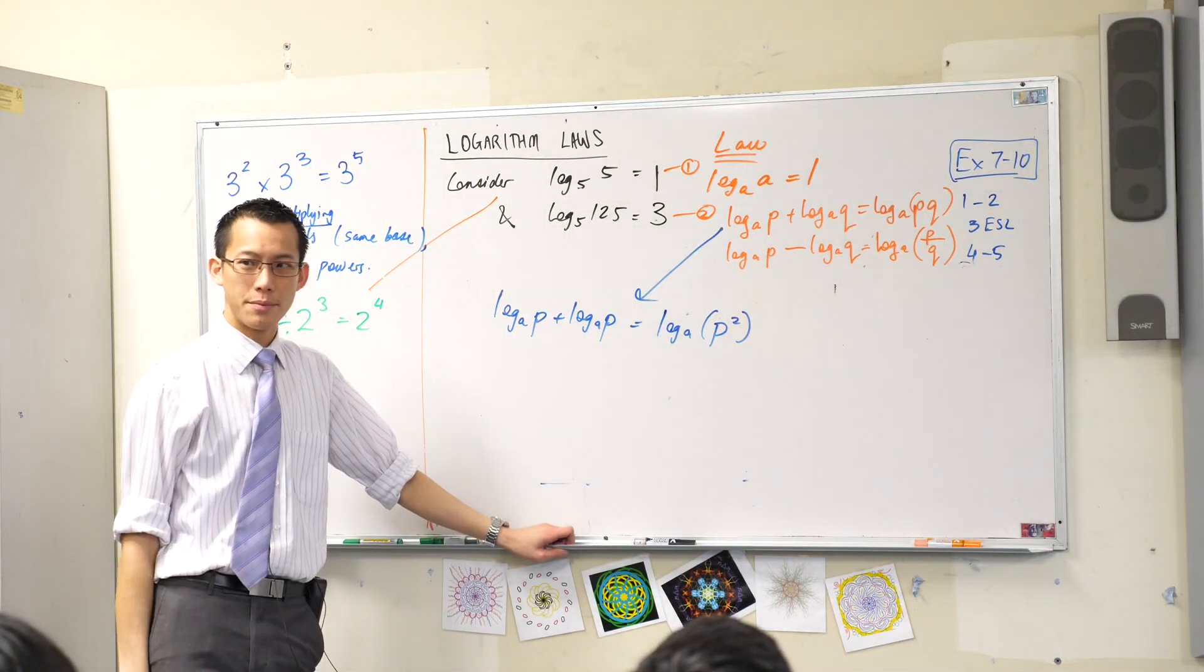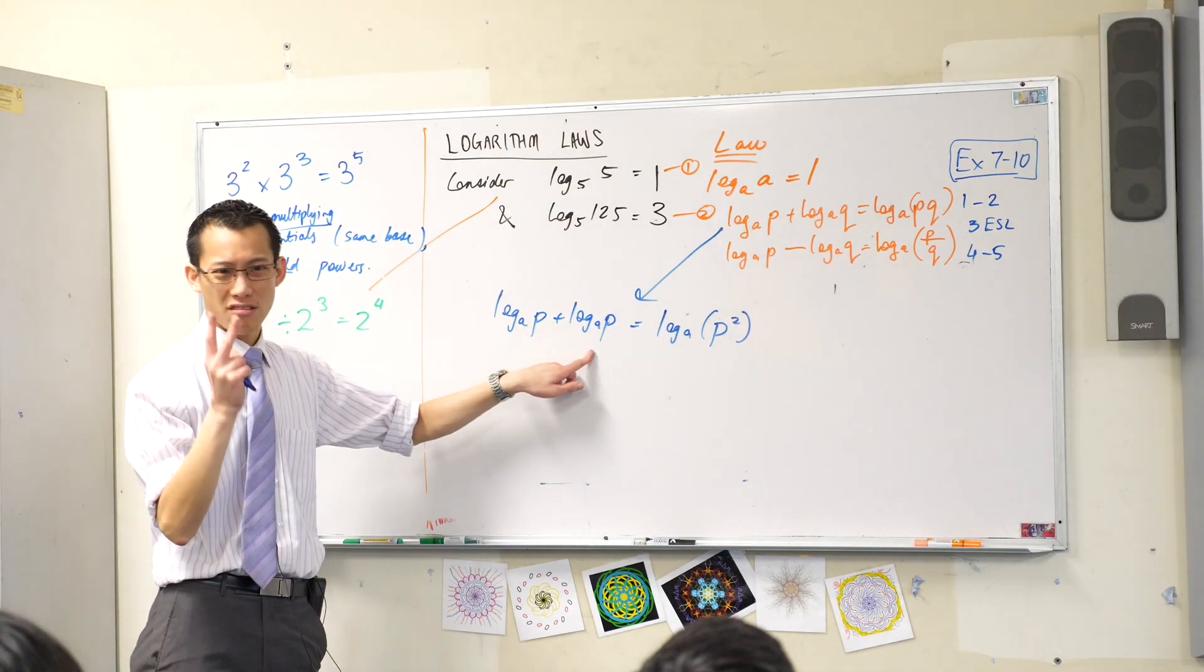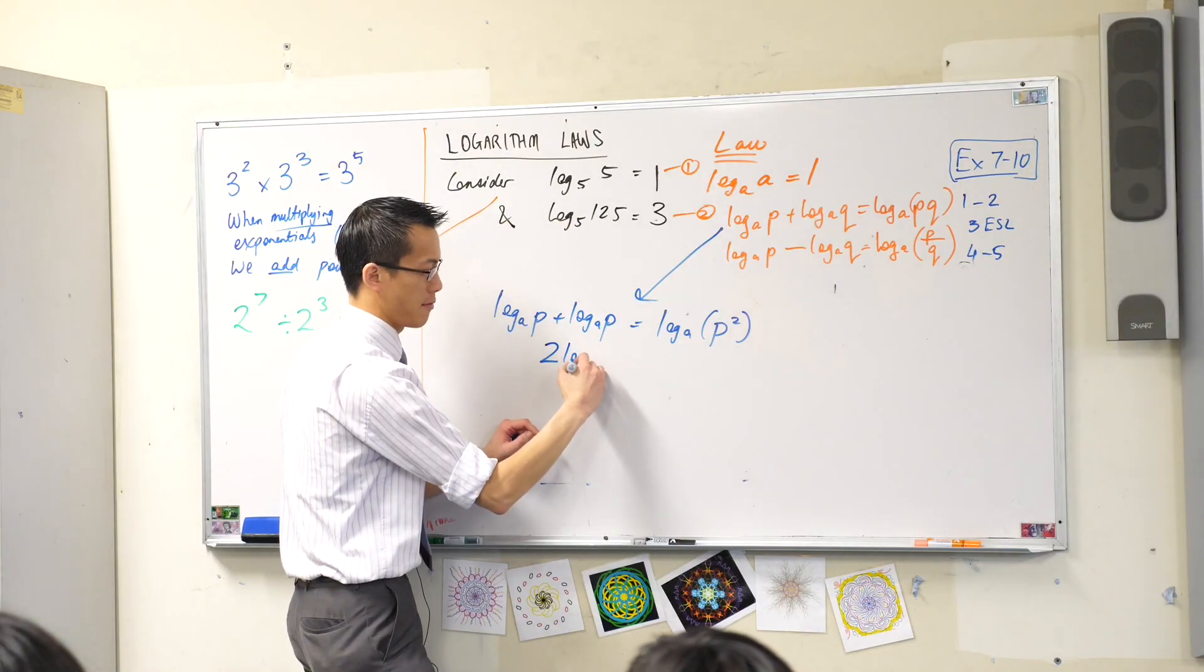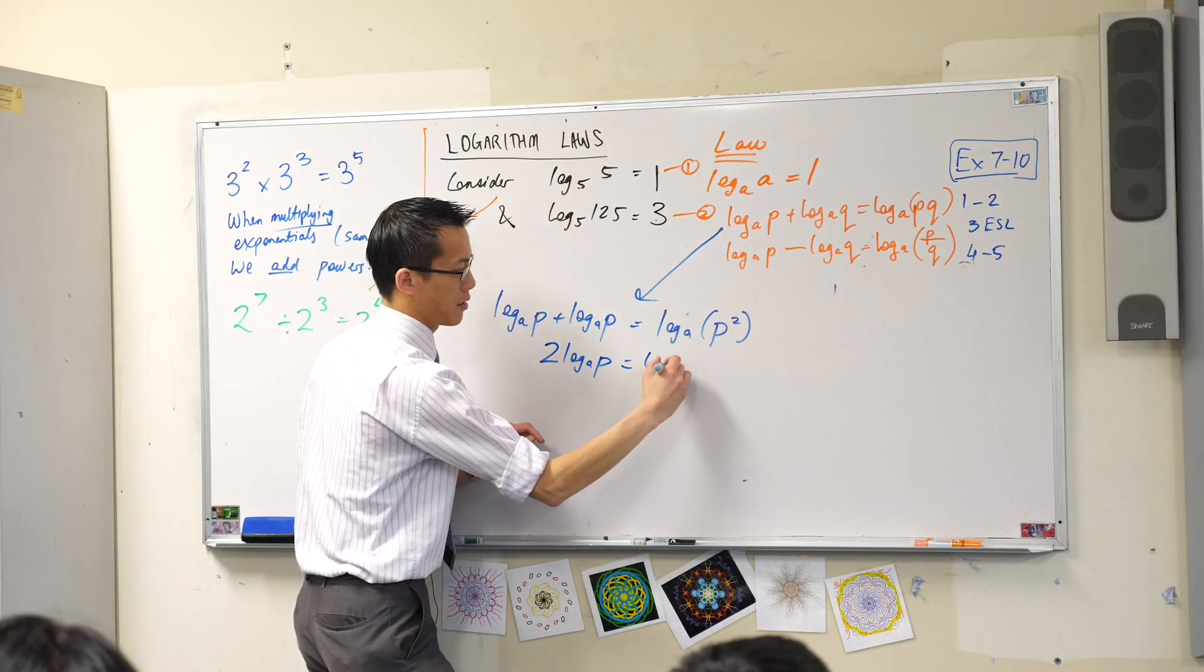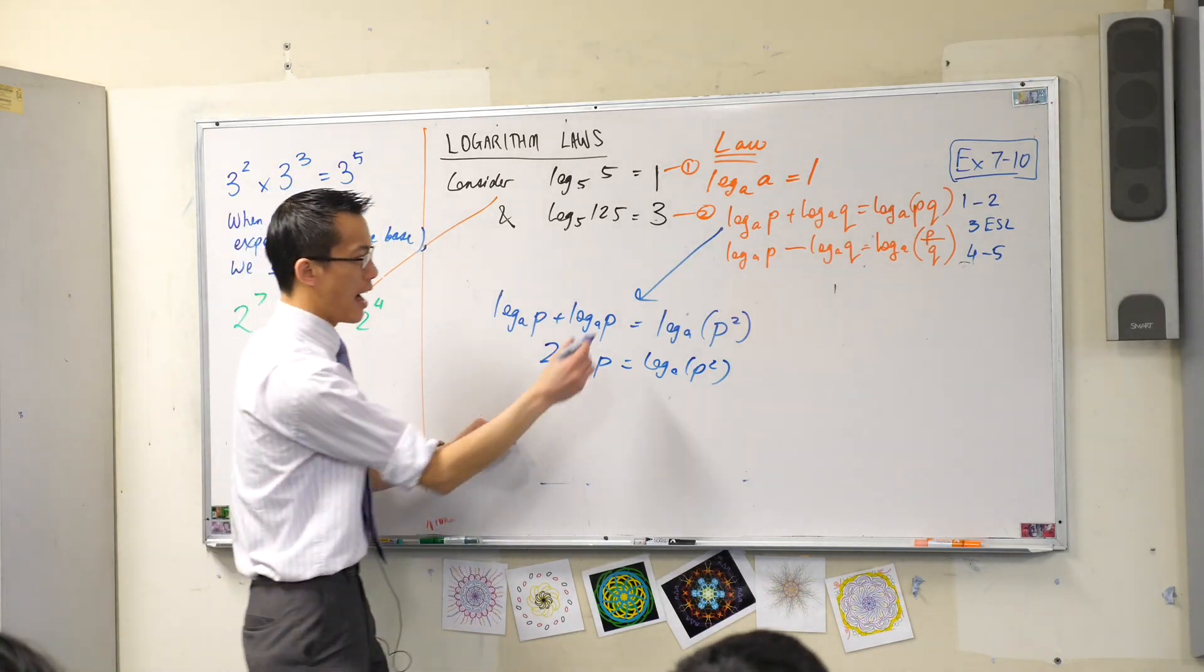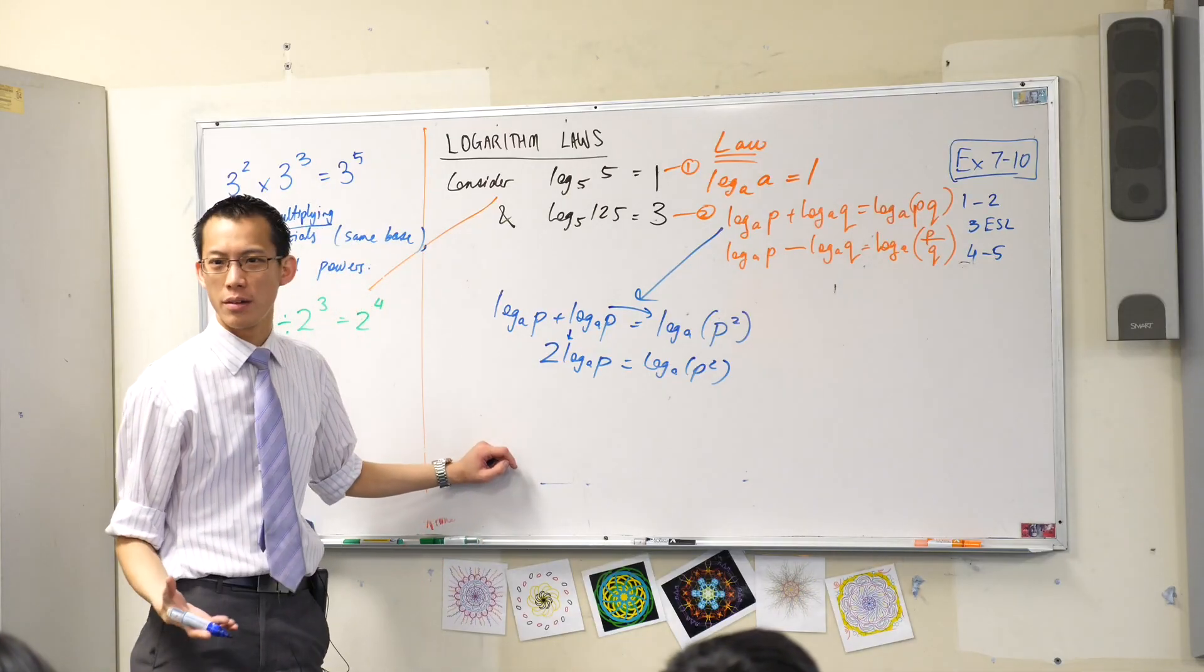But look at the left hand side. You've got the same thing twice. Well, I don't have to write the same thing twice. I can just say you've got two of them. Do you agree with that? I've looked at the same object. I've simplified it with a log law, but I've also simplified it just by collecting like terms.